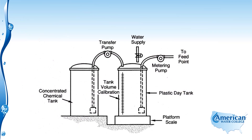The concentrated chemicals are stored in the chemical storage tank, and there is also a plastic day tank where the chemical is mixed with water so it's ready to be metered in. A transfer pump moves the concentrated chemical into the day tank, and the water supply is used to dilute it to the required concentration. A gauge tells you the level, and the metering pump meters the coagulant through the flash mixing process so that coagulation can occur just prior to flocculation.